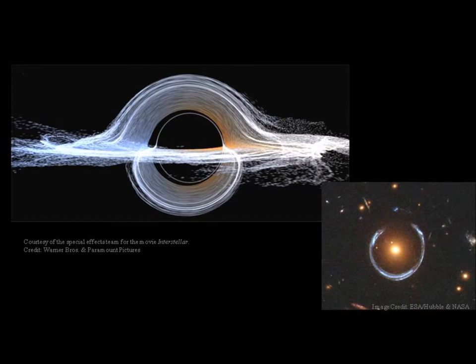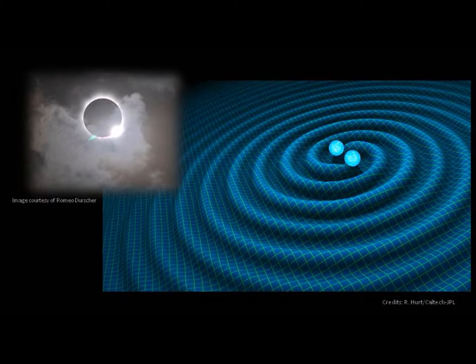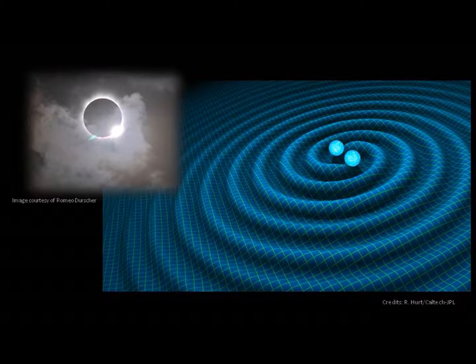The captivating black hole Gargantua in the movie Interstellar depicts general relativity. So does the gravitational lensing effect in reality that we see in so many cosmic images. The first glimpse of this phenomenon was made in the total solar eclipse of May 29, 1919.